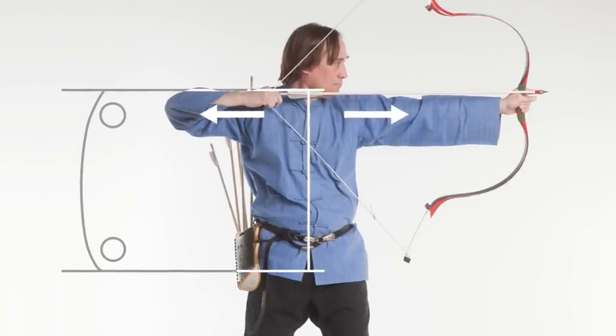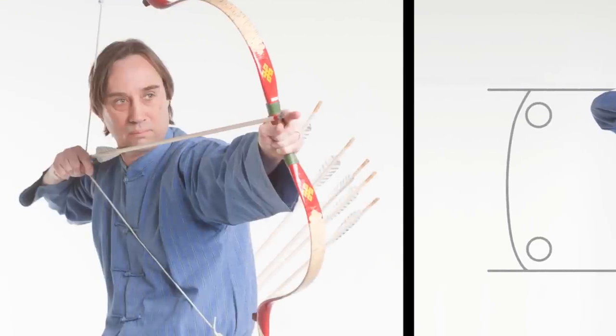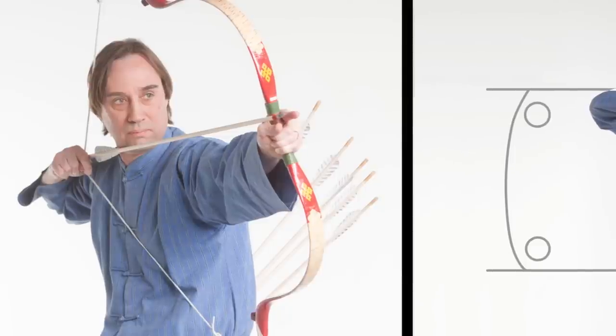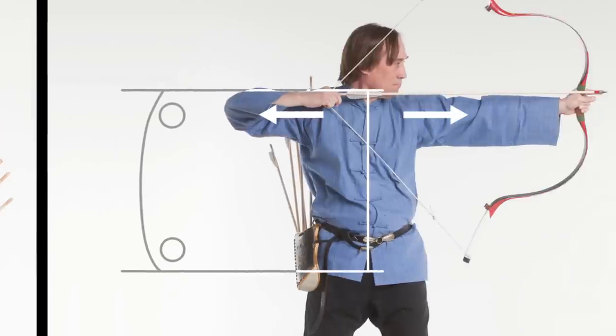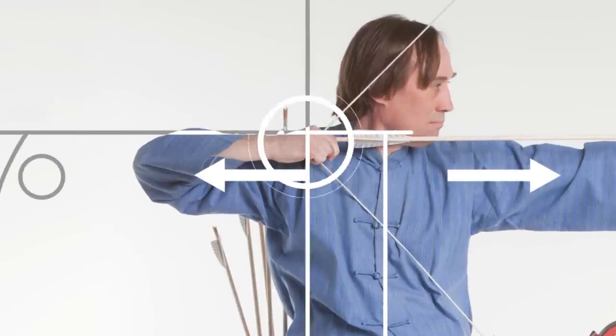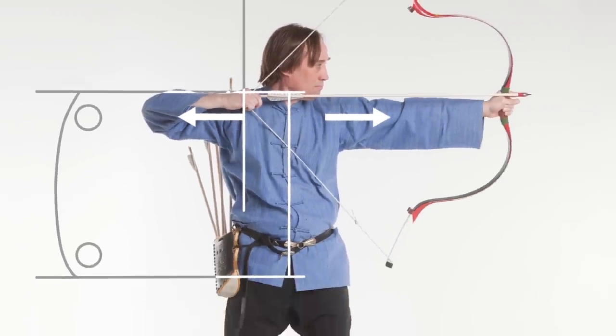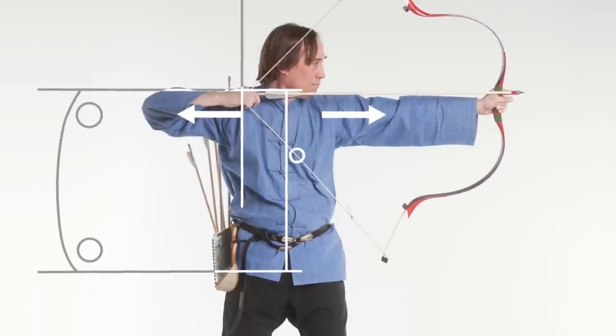This action rolls the pelvis under so that the tailbone is pointing to the ground and tilts the chest forward slightly as the string arm elbow moves behind the torso. This movement draws the string hand back to its full drawn position aligned with the rear shoulder joint. This action also brings the string into contact with the chest.